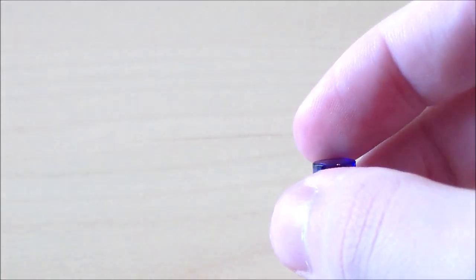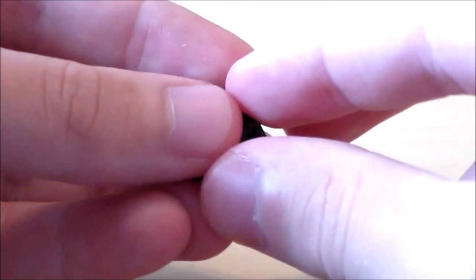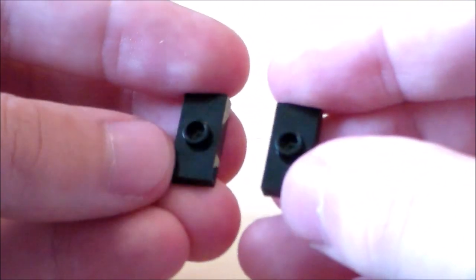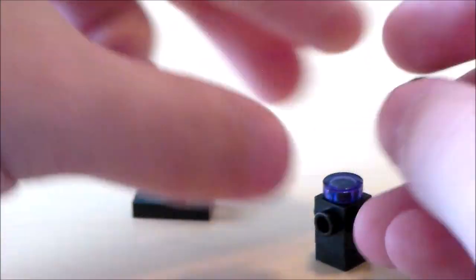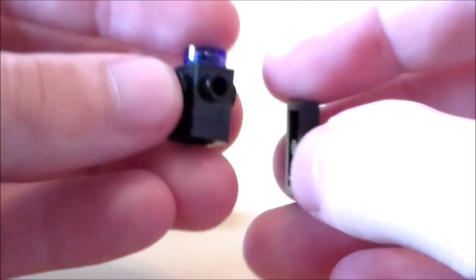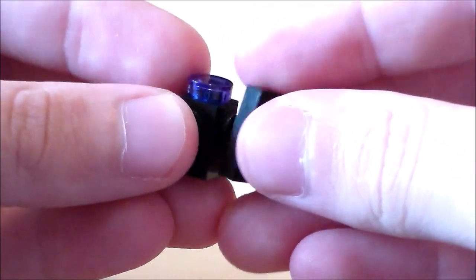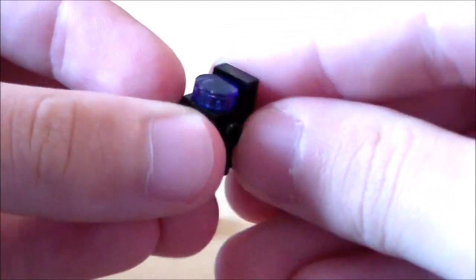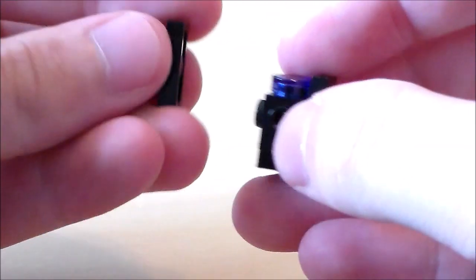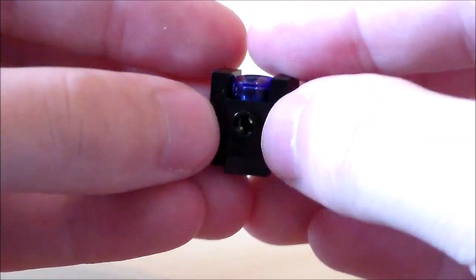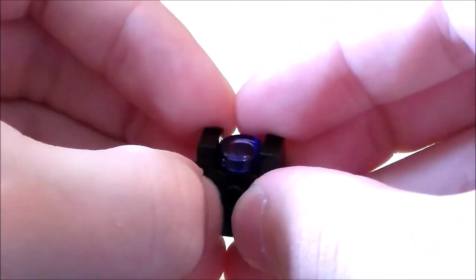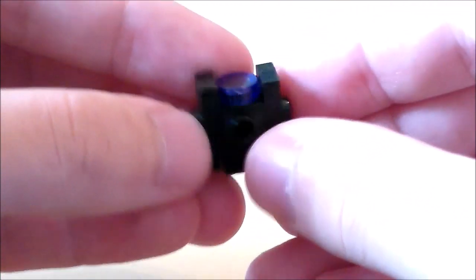Next I'm going to get two of these 1x2 black jumper plates. I'm going to put the hole in the middle, right in the center, so it'll line up with the top like that. I'm going to put one on either side, so it'll be looking like this.